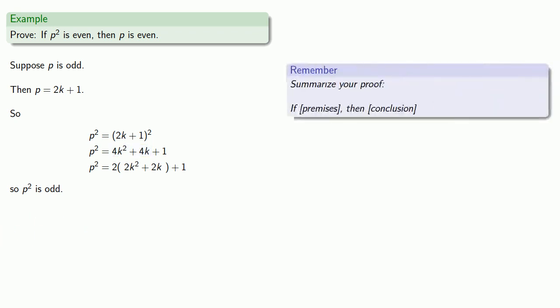So let's summarize our proof. Remember we can do that by rewriting it as a conditional, if premises, then conclusion. So if p is odd, then p² is odd.